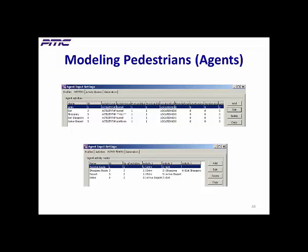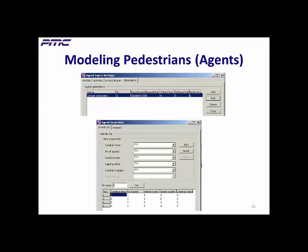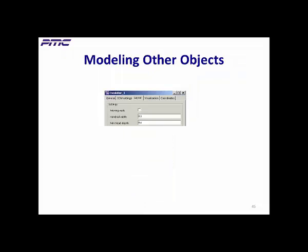The generators tab specifies where and how frequently pedestrians enter the simulation. Other modeling objects — like obstacles such as columns, entry/exits, commercial facilities such as stores or departments, stairs, and moving walkways — also have numerous input parameters. For example, you can even specify the width of the handrail on an escalator, that's how detailed Pedestrian Dynamics can get. In emergencies, escalators can be set to automatically stop so people can use them just like stairs during evacuations.